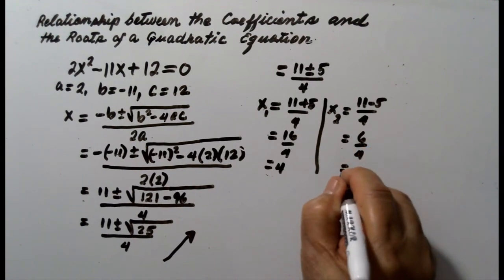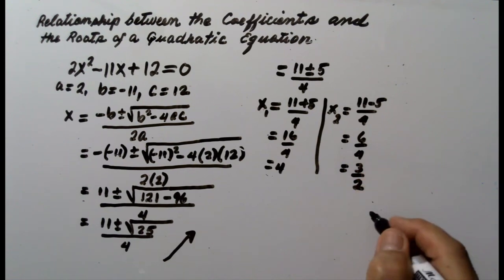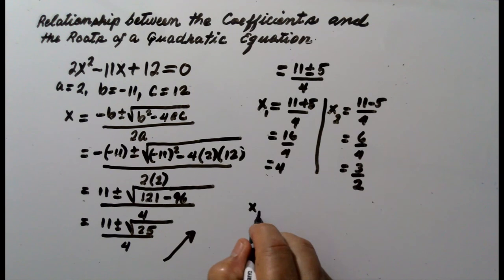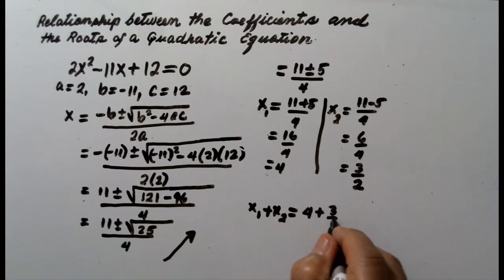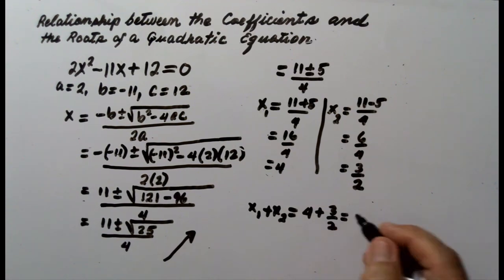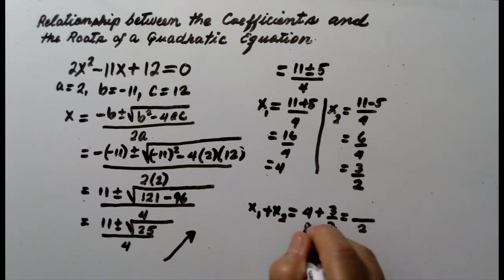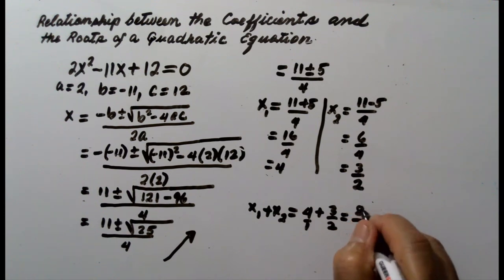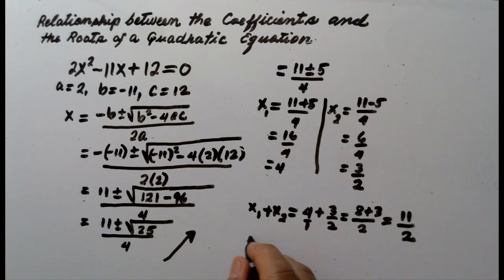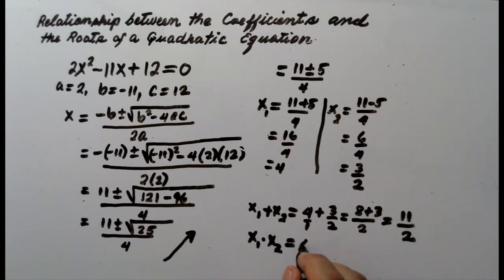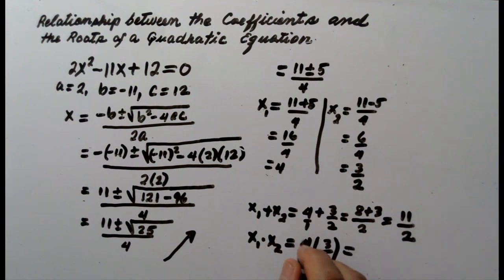Simplifying 6 over 4, we get 3 over 2. Let us check: the sum x sub 1 plus x sub 2 is equal to 4 plus 3 over 2. The common denominator is 2, so this is 8 plus 3 over 2, which equals 11 over 2. And the product of the roots, x sub 1 times x sub 2, is equal to 4 times 3 over 2. Simplifying, the product of the roots is 6.